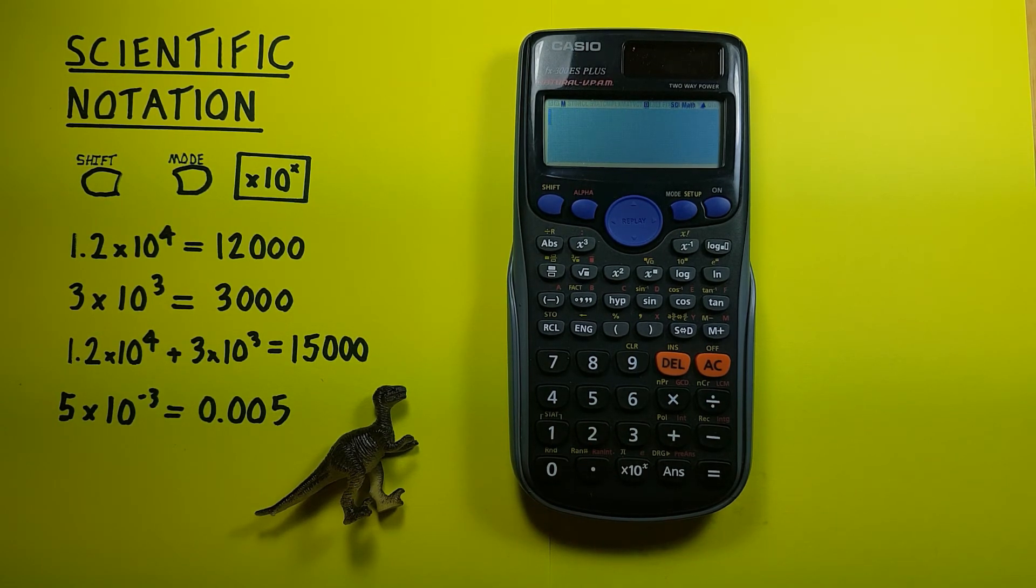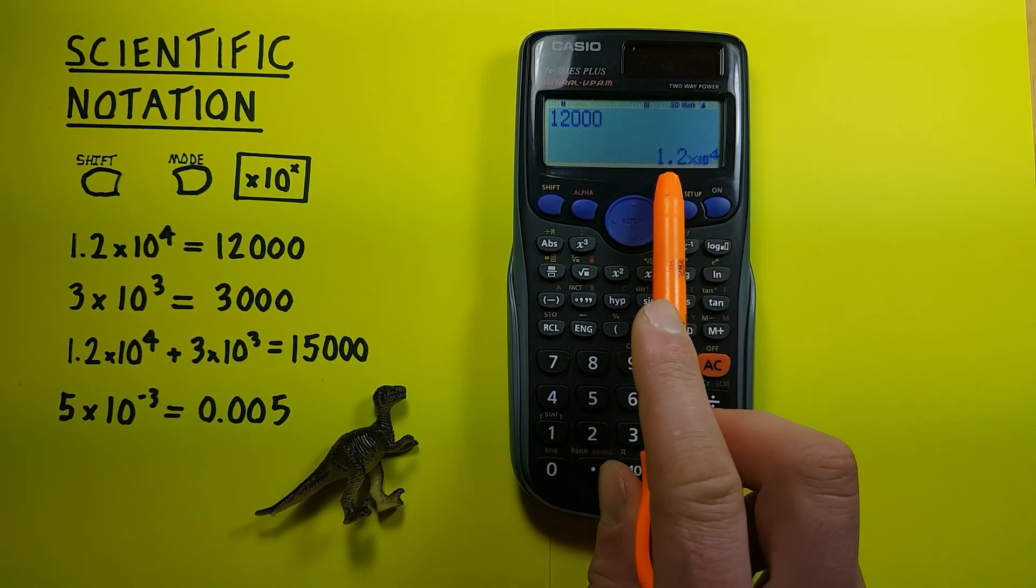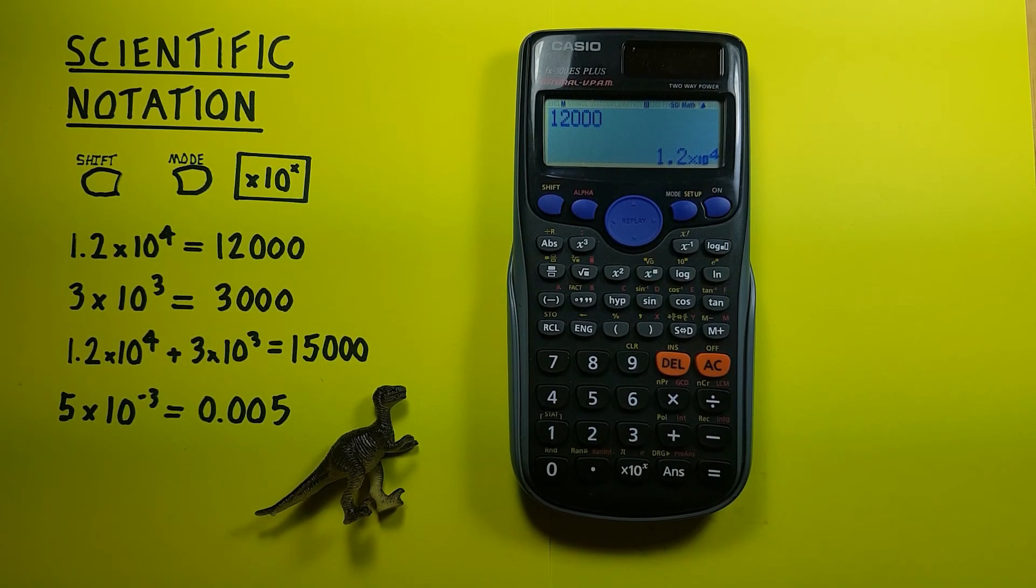Alright, so let's go in reverse now. Let's say we had 12,000, and we wanted to get that result in scientific notation. Well, we would enter 12,000 and convert, and we see it has changed for us to 1.2 times 10 to the power of 4.